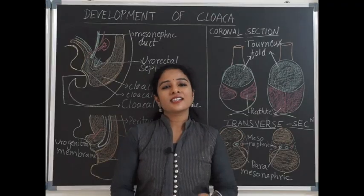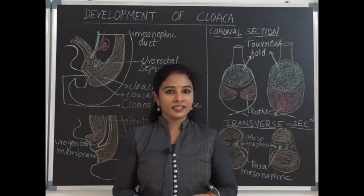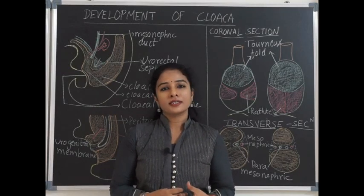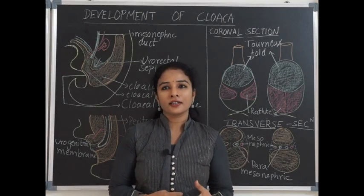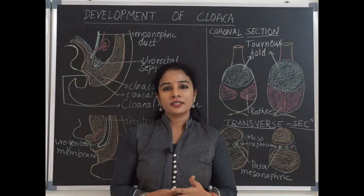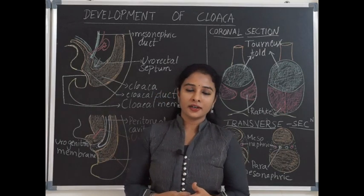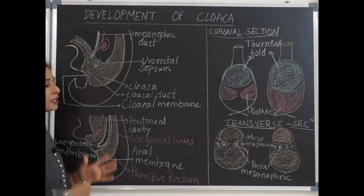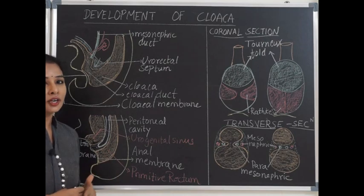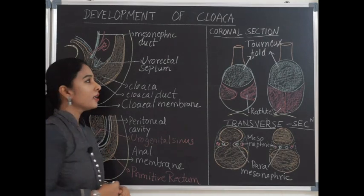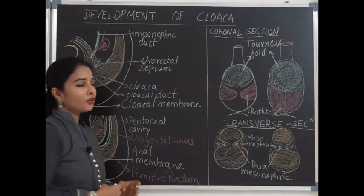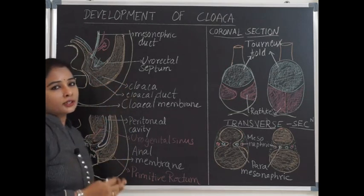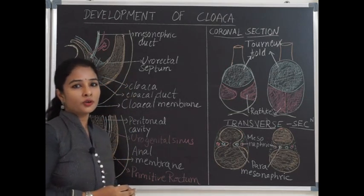The hindgut is suspended in the dorsal mesentery, which is a primitive dorsal mesentery containing the inferior mesenteric vessels supplying the hindgut. The hindgut is divided into pre-allantoic and post-allantoic parts. The pre-allantoic part is a narrow tube-like structure, and the post-allantoic part gets dilated to form the cloaca.